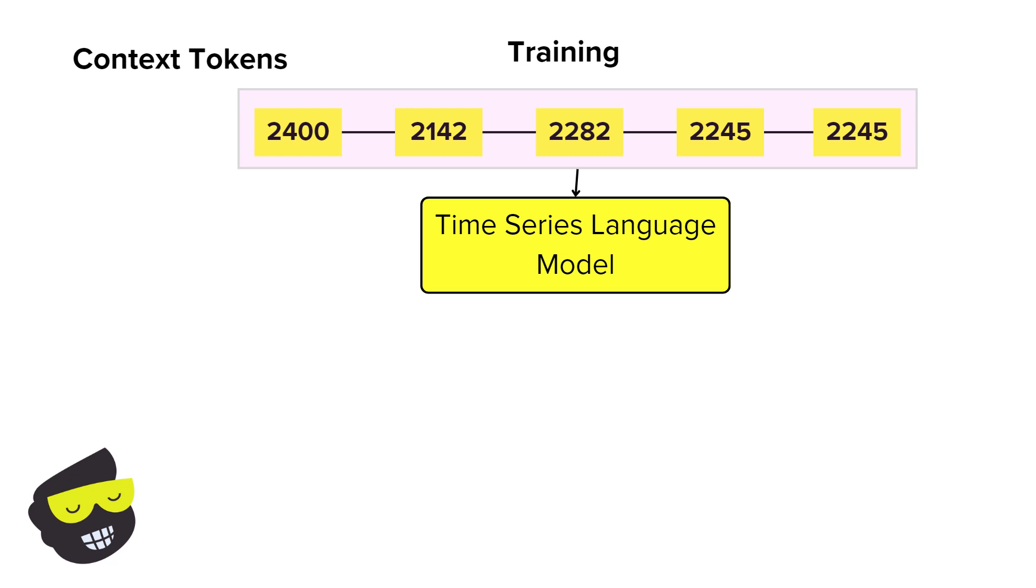This is really where the magic happens. So Chronos uses a modified T5, the text-to-text transformer model. And T5 treats every problem as a text-to-text problem. And this allows to process and predict sequences effectively.